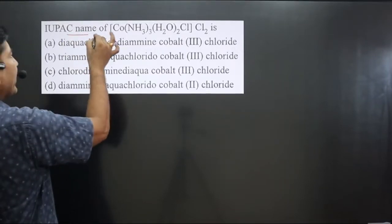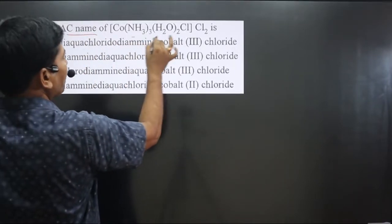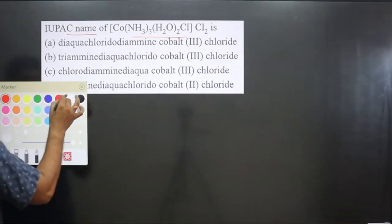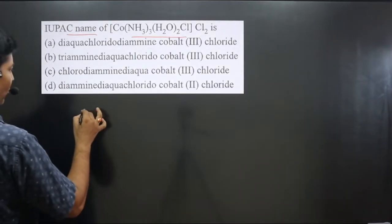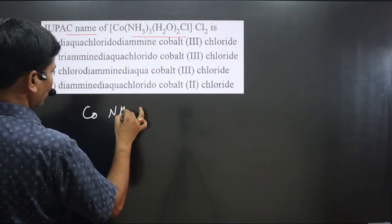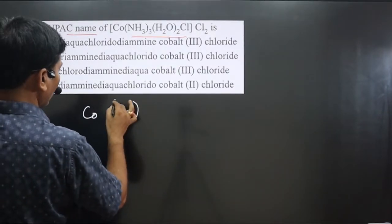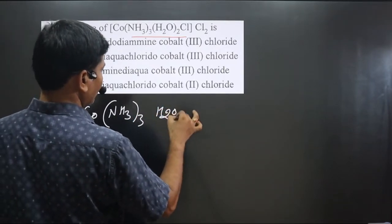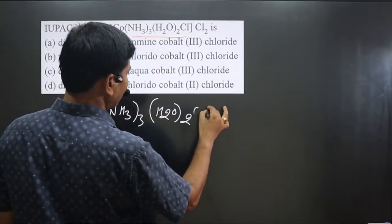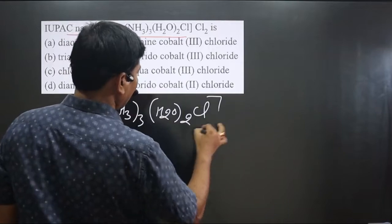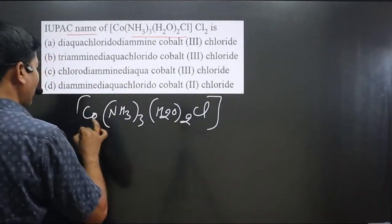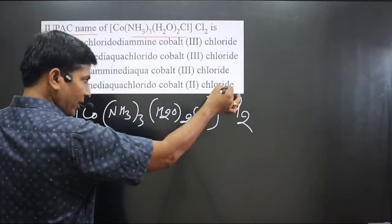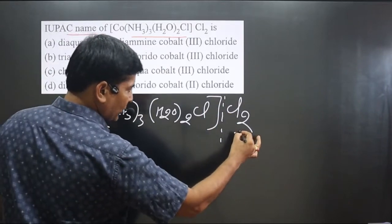The question asks us to name the complex. We have the chemical formula: cobalt with NH₃ three times, H₂O twice, and Cl inside the complex bracket, with Cl₂ as the counter ion outside.